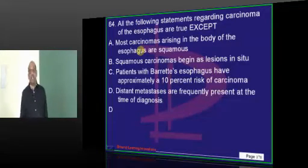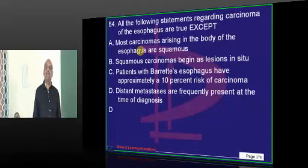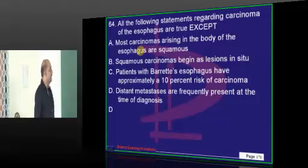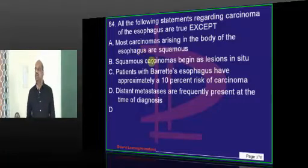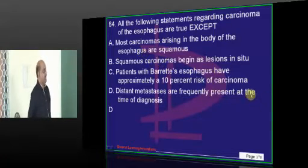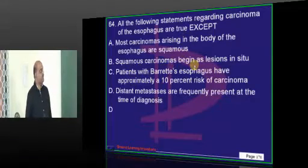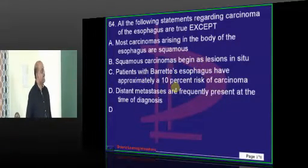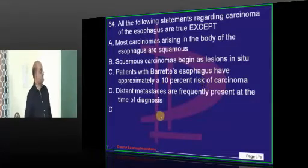Coming to carcinoma of the esophagus — unlike other areas, distant metastases are not frequent at the time of diagnosis. All remaining statements are true: squamous cell carcinomas begin as lesions, and Barrett's esophagus can typically lead to increased risk of carcinoma — everything is true.